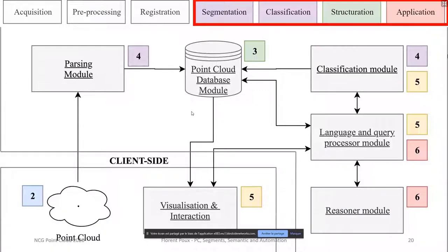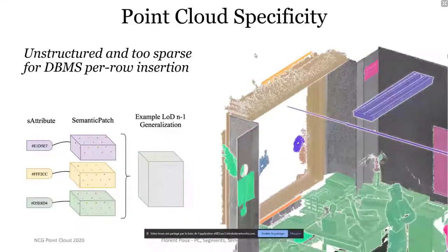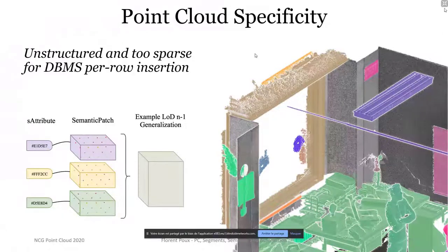The first big direction is the Smart Point Cloud infrastructure or architecture, which addresses automation from segmentation to application. The point cloud is ingested by the parsing module, which creates clusters fed to a central database module. This database module is where we think about how to structure data, knowledge, and language. In point clouds, one point does not describe an object by itself, so attaching a semantic attribute per point is not the most pertinent approach.